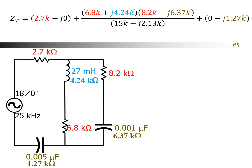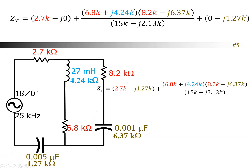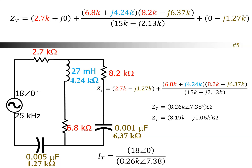Now we can collect terms — the two series components. We can add the real part and the imaginary part to get one term. So that would be 2.7K − j1.27K, plus the parallel branches we just went over. All I did was collect the first and the last term together — it makes it a little bit easier to enter into the calculator. Once I do put that into the calculator, I get a value of 8.2K ∠7.38 ohms — that is the total Z of the circuit. Using that to find the total current: voltage divided by Z gives 2.18 milliamps at angle 7.38.